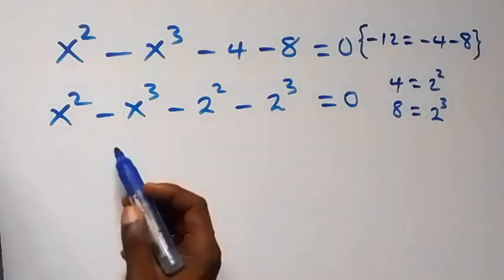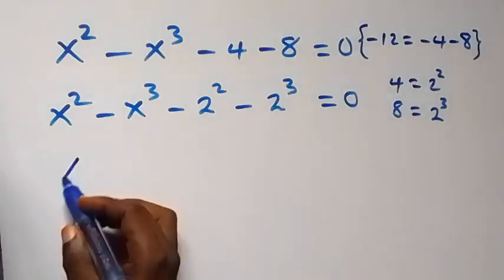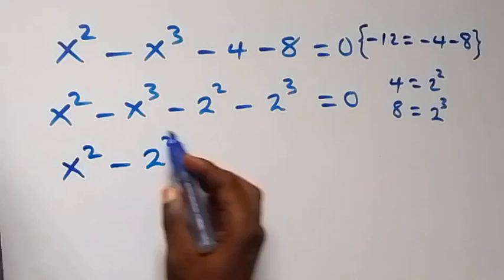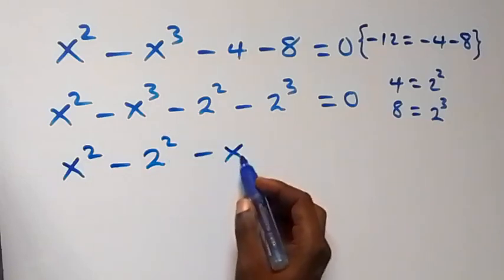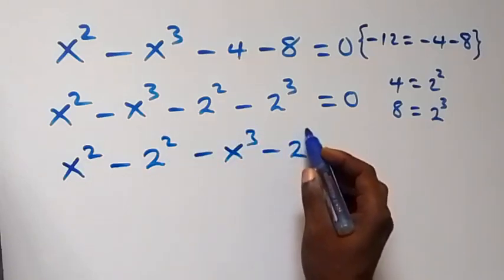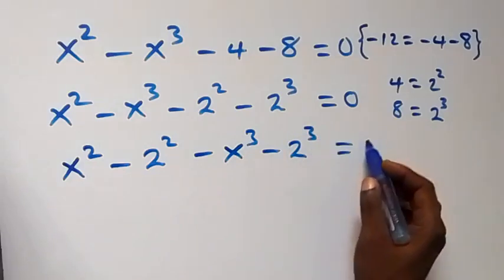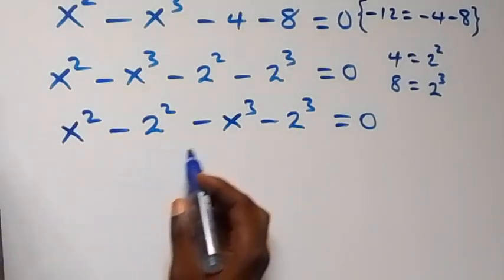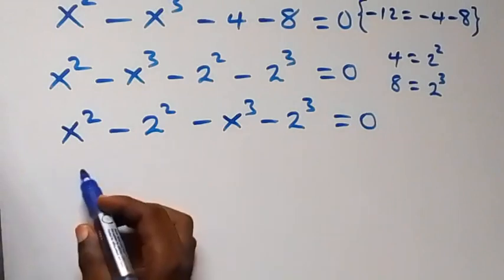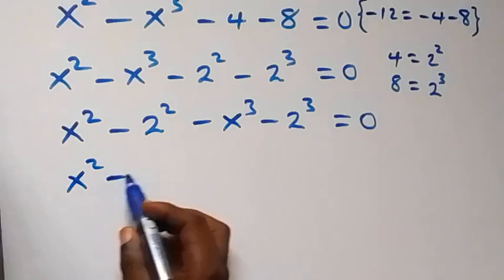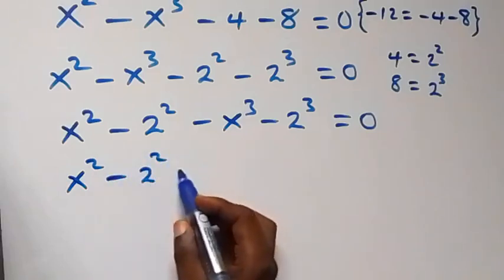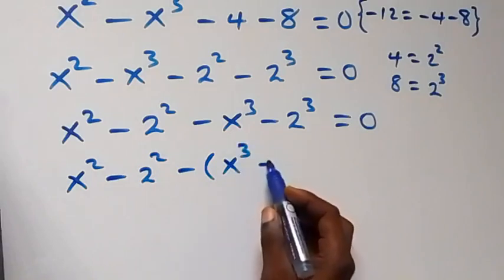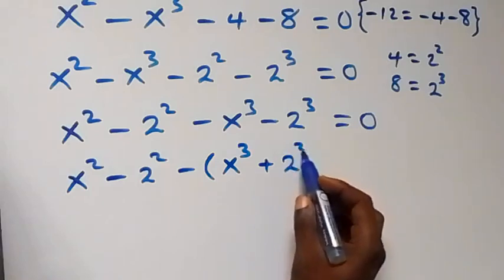Then let's group squares together: we have x squared minus 2 squared, and also we have minus x cubed minus 2 cubed, now equals to zero. Then here we can factor minus out, so this becomes (x squared minus 2 squared) minus (x cubed plus 2 cubed), now equals to zero.